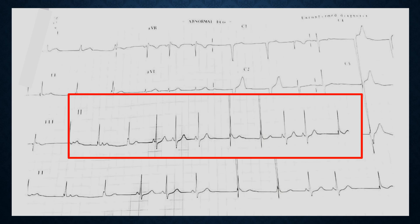Let us look at the long lead 2. Here we can see some funny looking complexes. We need to see what's happening, as there are two different types of morphologies in the QRS being seen — one here and the other here. Looking at the P waves, at some places the P wave is preceding the QRS complexes, and in other places we can't see a P wave.